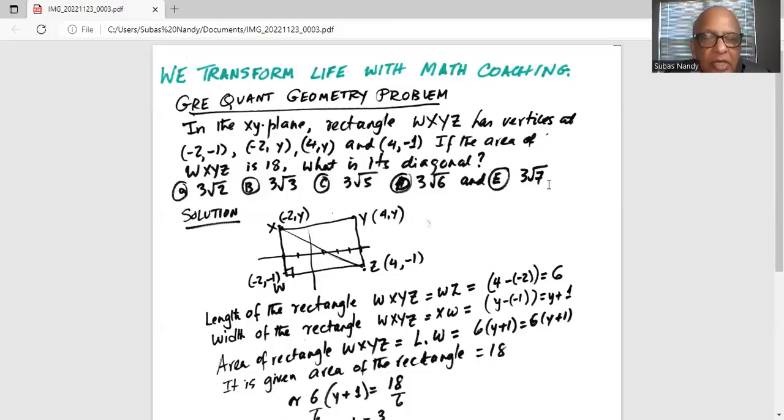So the area of the rectangle is length times width, which is WZ multiplied by XW, which is 6 times (y + 1).